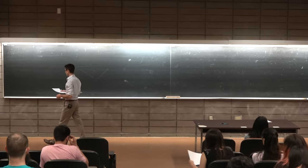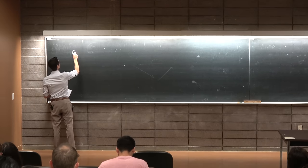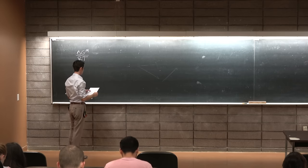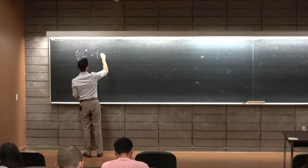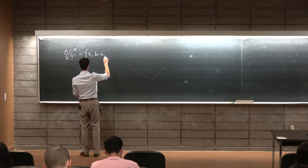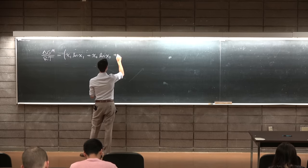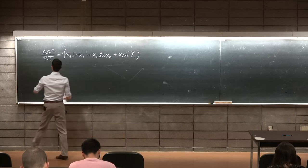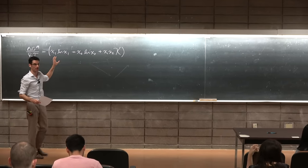Let's look at the final result from last class. We have this expression for ΔG_mixing over RT, and it equals the entropy of mixing: x₁ ln x₁ plus x₂ ln x₂, plus x₁x₂ times chi. Where we ended last class, we had a kT in the denominator, and I changed it to RT because we're going to be talking about per mole.